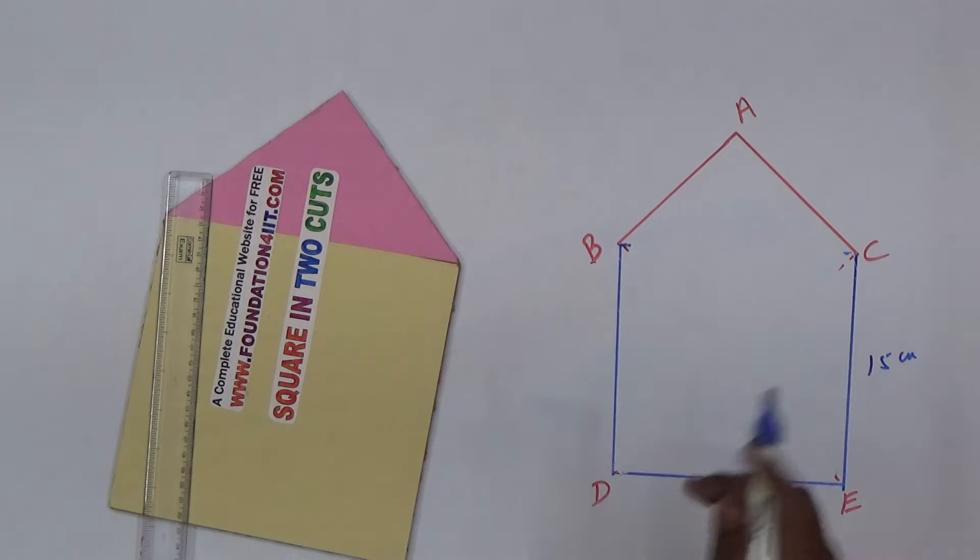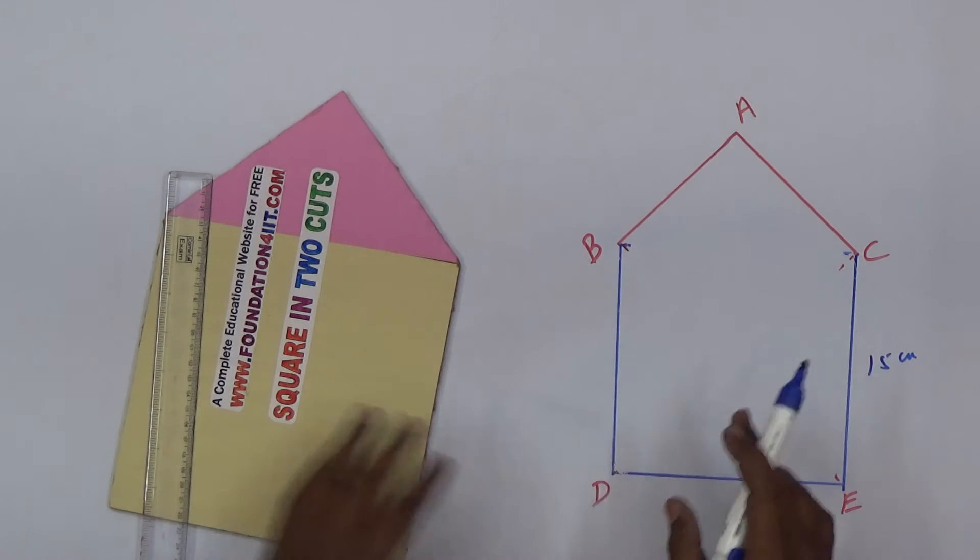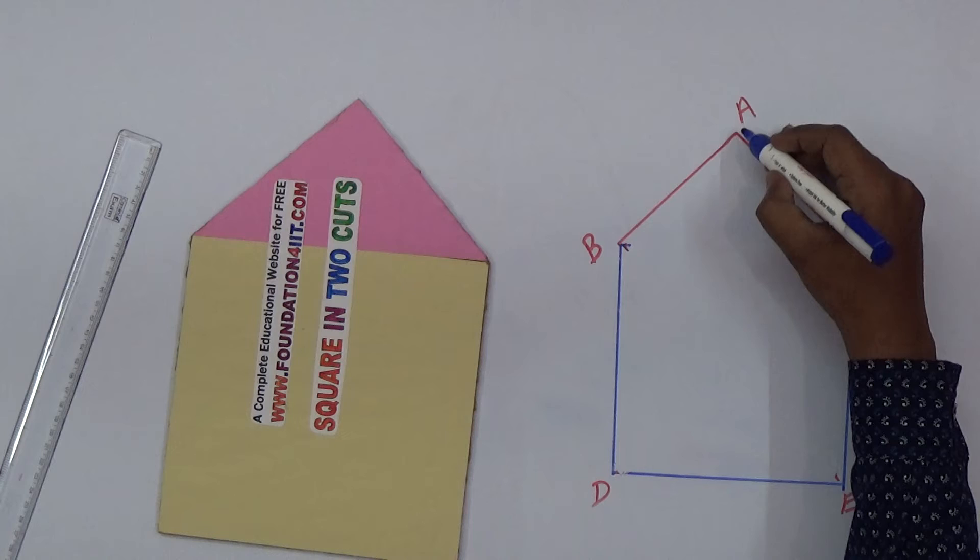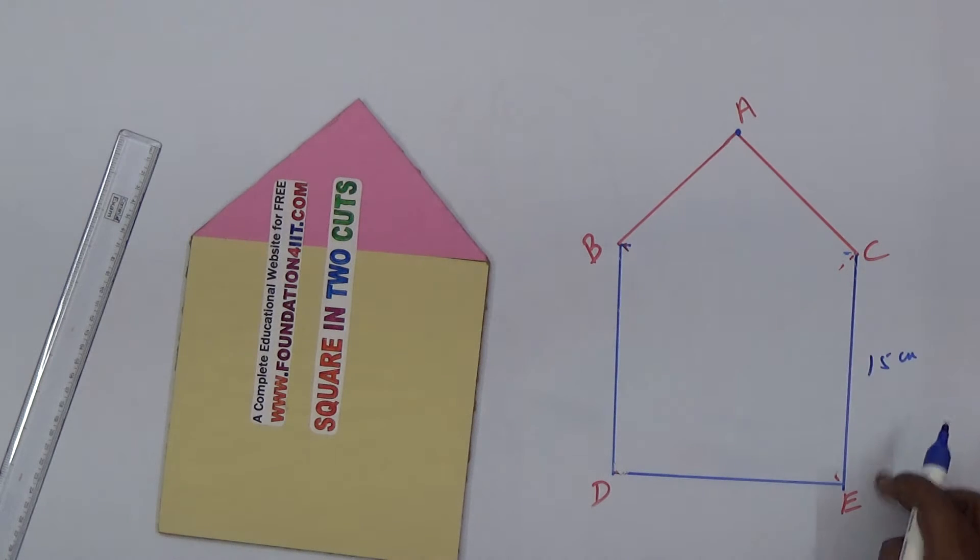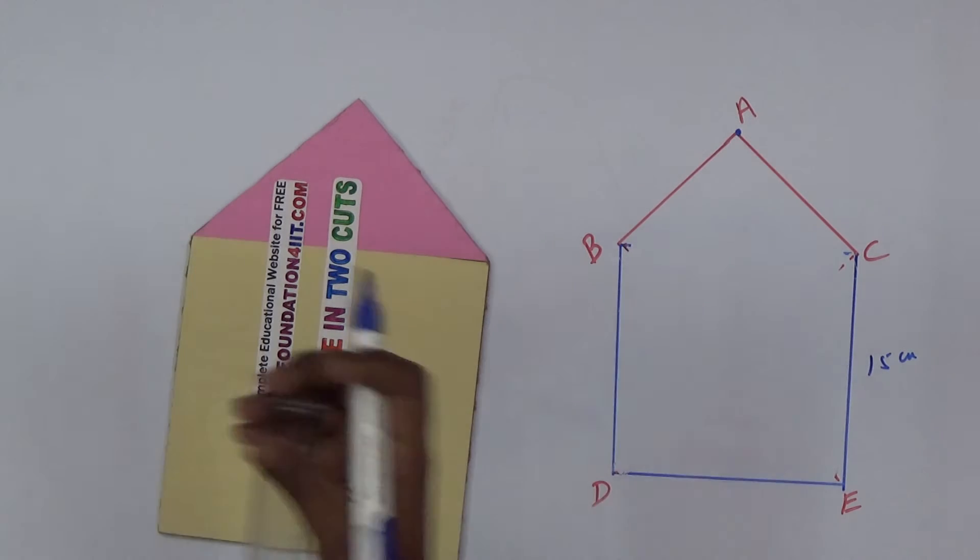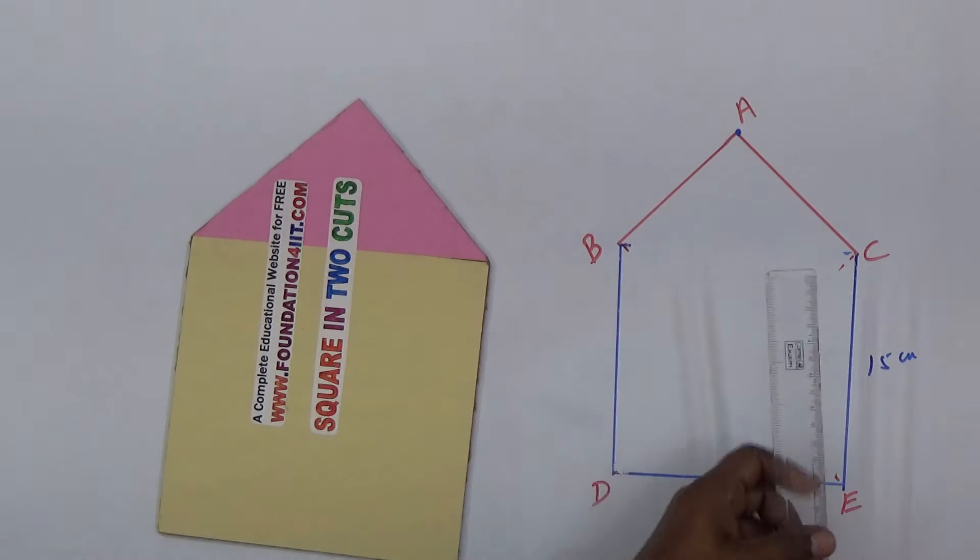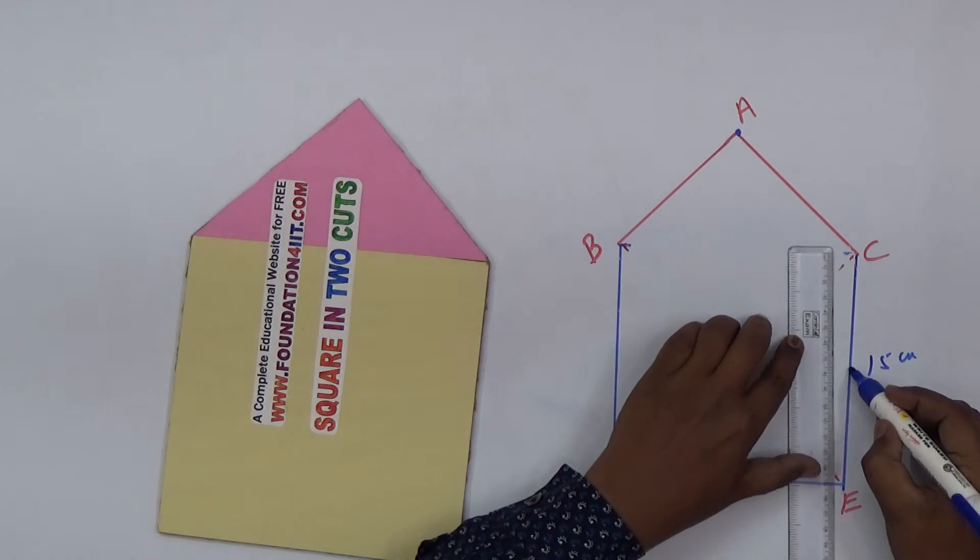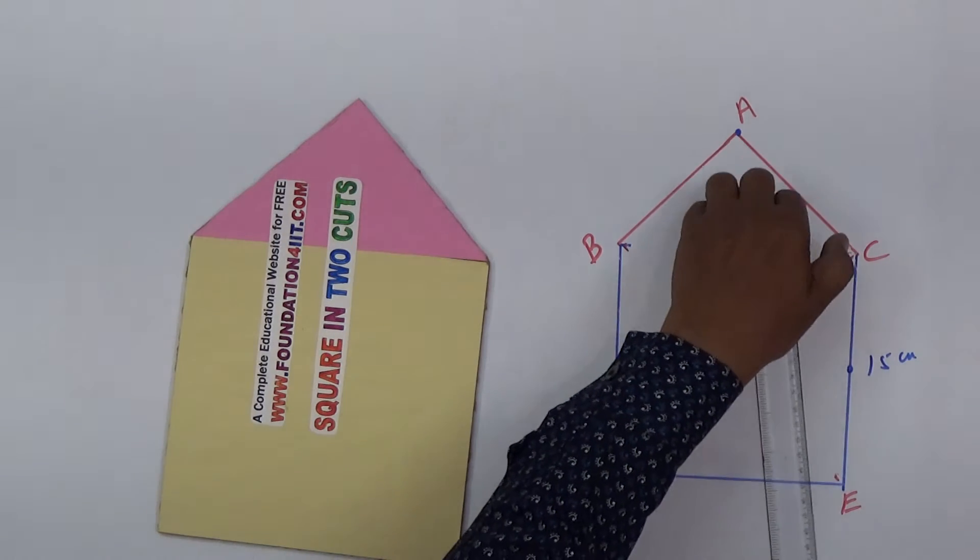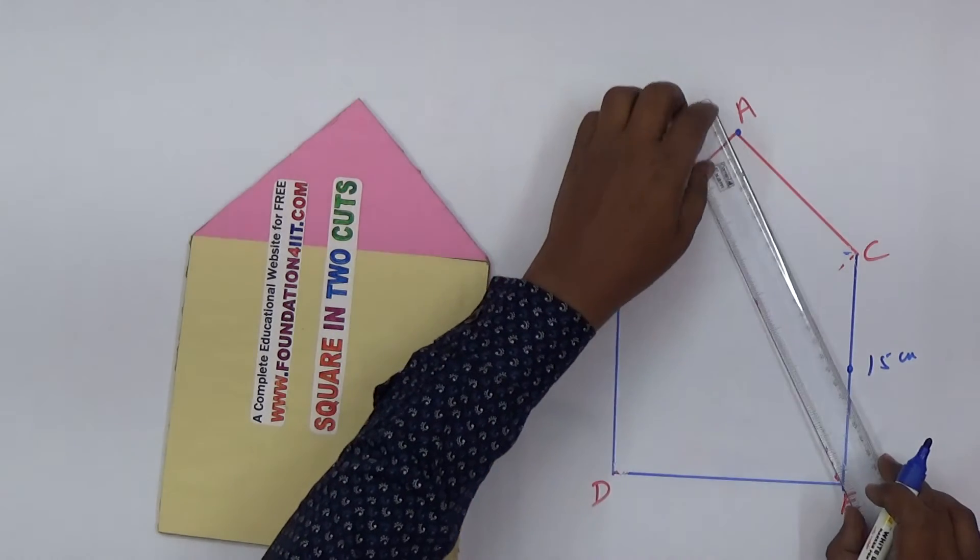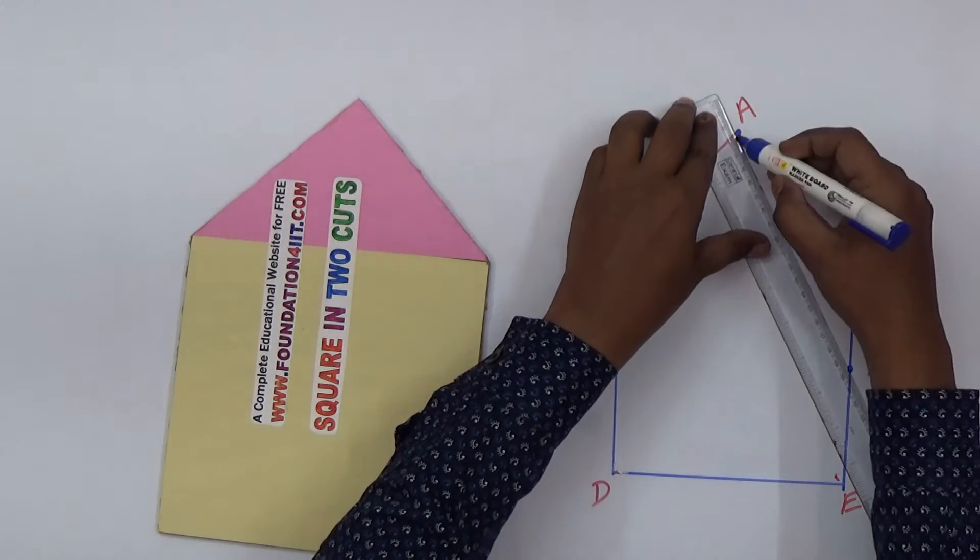By making only two straight cuts, if you combine that again you should form this square. From A we should join the midpoint of EC. This total is 15 centimeters, so at 7.5 you can take this point and just join from A to the center point of EC.